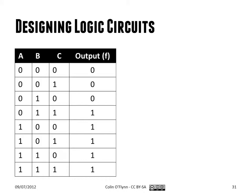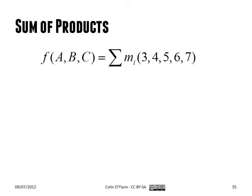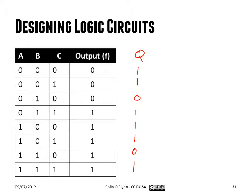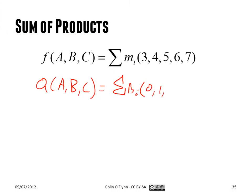We start with a simple truth table showing inputs and outputs. If we have more than one output, each output would have effectively a separate truth table. So if you have another output Q with different requirements, in the exact same way we have F of ABC, we could have Q of ABC, equal to whichever points it is 1. In this example it's 1 at 0, 1, 3, 4, 5, and 7 — and we could derive a circuit that creates that output.